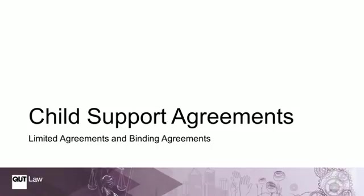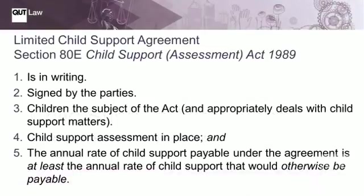We will start with limited child support agreements. Section 80E subsection 1 of the Child Support Assessment Act sets out the requirements for an agreement to be a limited child support agreement. It must be: (a) in writing, (b) signed by the parties, (c) properly dealing with children the subject of the Child Support Assessment Act, and appropriately dealing with child support matters. Also, section 80 subsection 2 says that generally there must be (a) an existing child support assessment in place, and (b) that the annual child support payable under the agreement is at least the annual rate of child support that would otherwise be payable — that is, the amount under the agreement needs to be greater than the existing assessment.